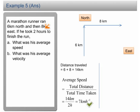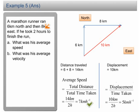In order to find average velocity, we need to determine the total displacement and total time taken beforehand. By using the Pythagoras theorem, the displacement is 10 km. From this question, we can see how speed is different from velocity. Speed is distance over time, whereas velocity is displacement over time.